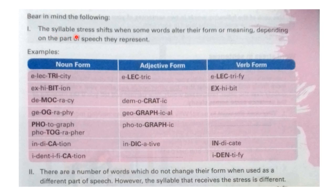Number one: the syllable stress shifts when some words change their form or meaning. You can see the form — noun form, adjective form, verb form. When these forms change, then the stress also shifts depending on the part of speech they represent. If it is a noun, then where will the stress be? If it is an adjective, then where will the stress be? If it is a verb, then where will the stress be? According to that, the stress place will be shifted.